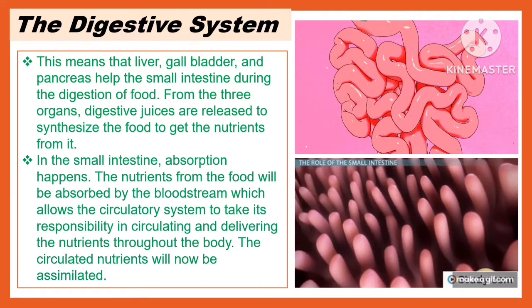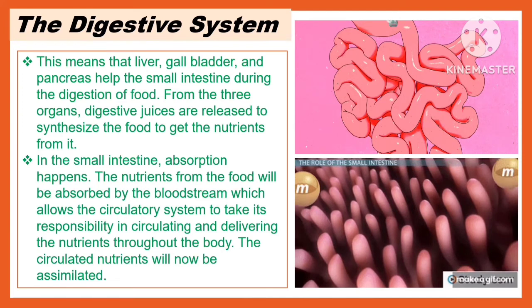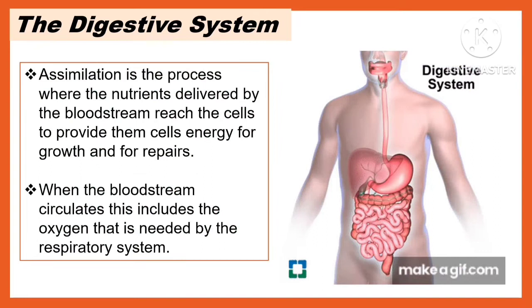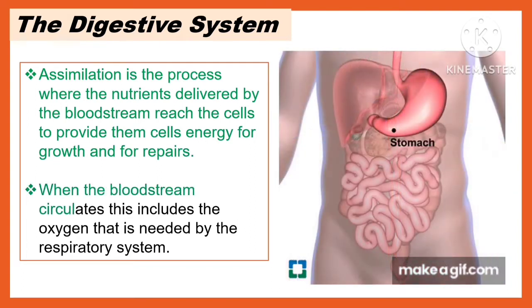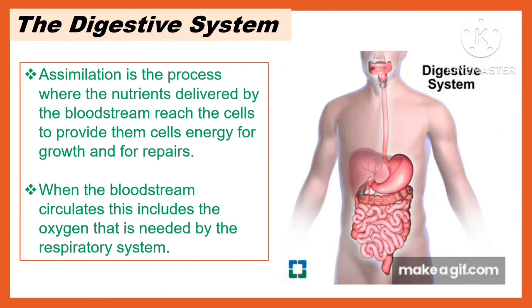From these three organs, digestive juices are released to synthesize the food and get the nutrients from it. In the small intestine, absorption happens. The nutrients from the food will be absorbed by the bloodstream, which allows the circulatory system to take responsibility in circulating and delivering the nutrients throughout the body. The circulated nutrients will then be assimilated. Assimilation is the process where the nutrients delivered by the bloodstream reach the cell to provide cell energy for growth and repair. When the bloodstream circulates, this includes the oxygen that is needed by the respiratory system.